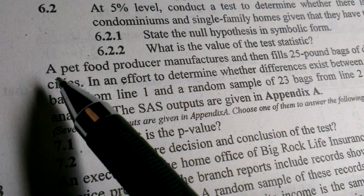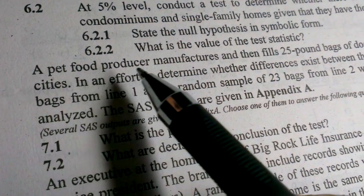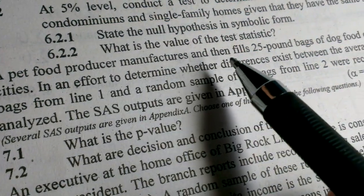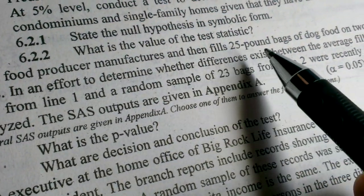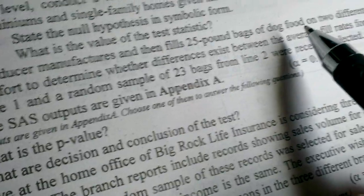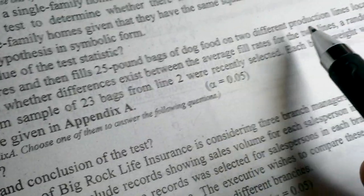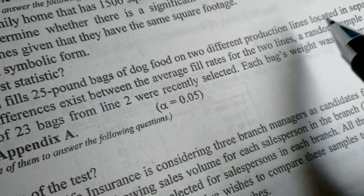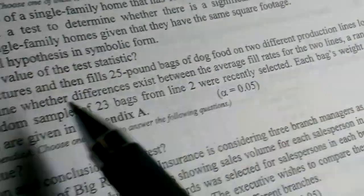Let's study this problem. A pet food producer manufactures and then fills 25 pound bags of dog food on two different production lines located in separate cities.